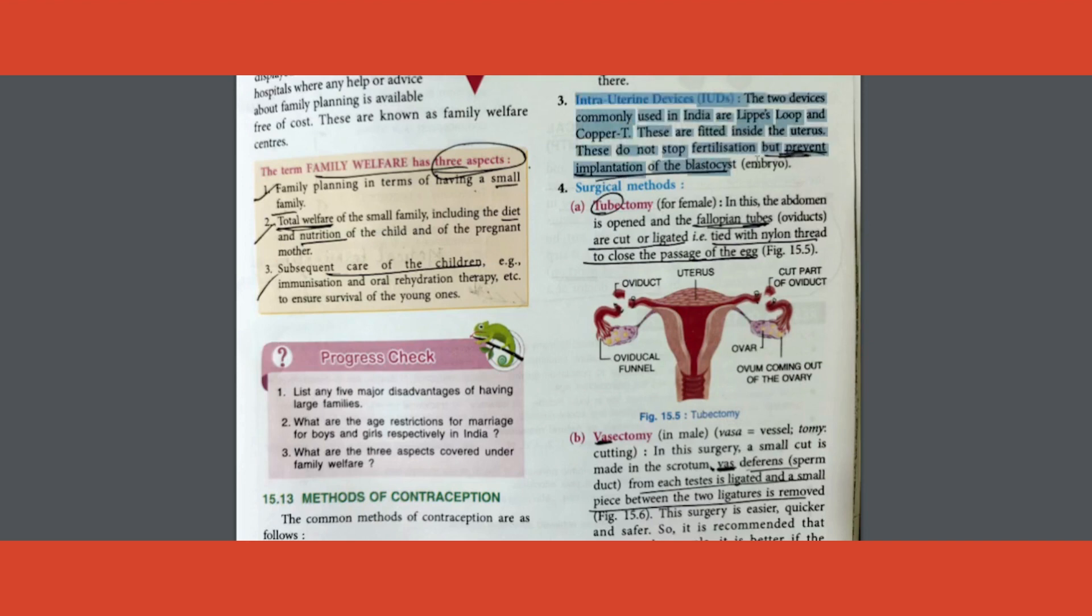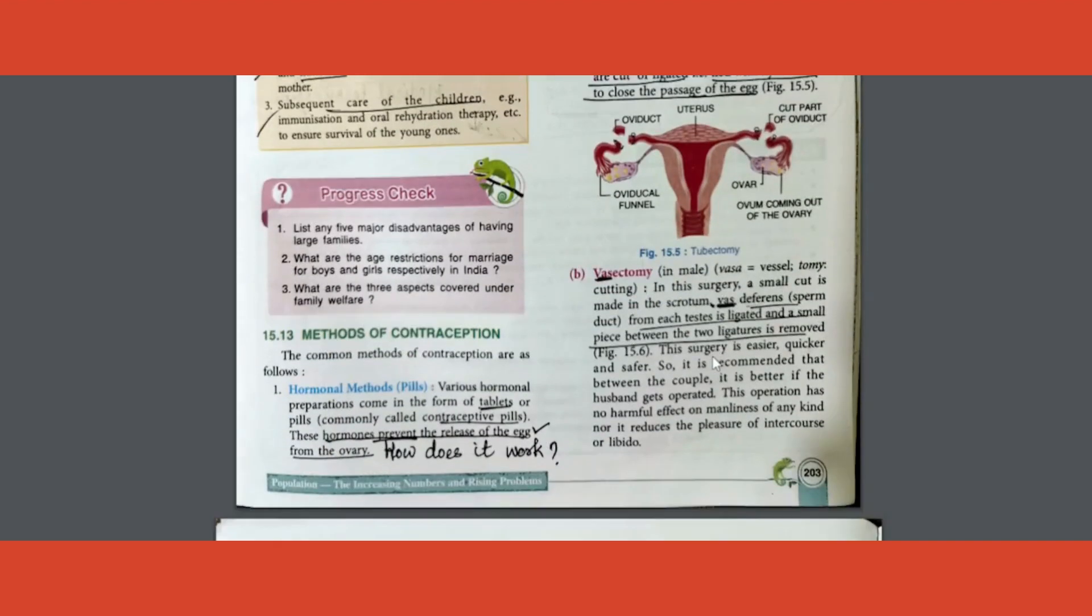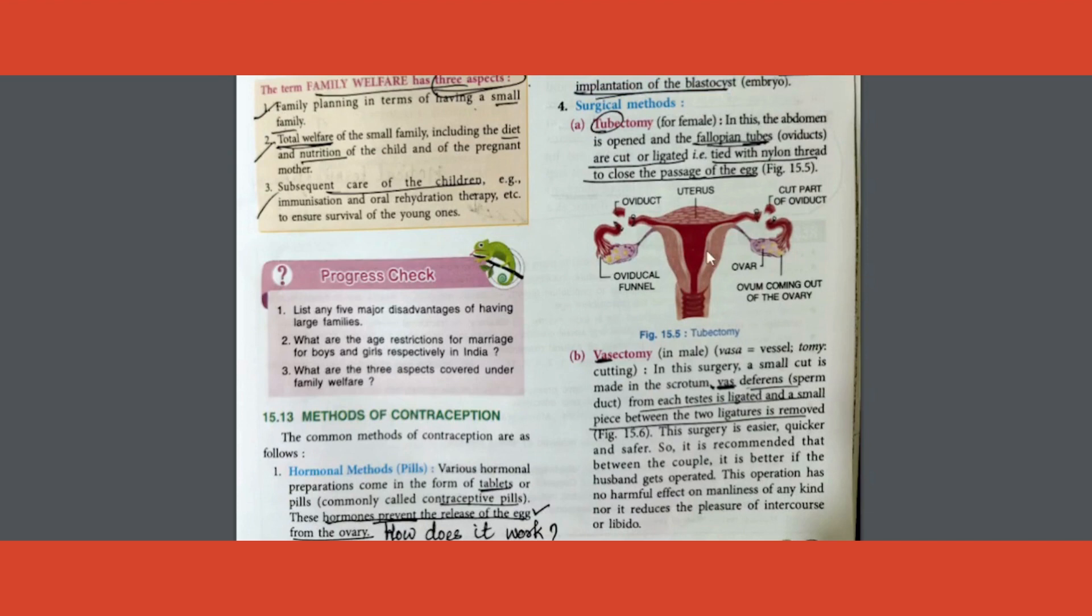After that comes surgical method. Two mark question can be expected from here. This is the only place where something solid, two points and all that can be written. Differentiate between question also can come: vasectomy and tubectomy. Tube, what is a tube? Fallopian tube. If that is cut and joined back, or cut and tied, then you call that as tubectomy. In case of vas, vas deferens, that is a sperm duct, that is cut and ligated. Ligated basically means tying up.